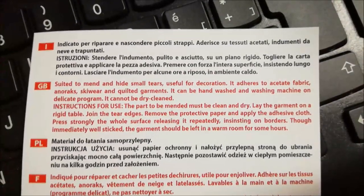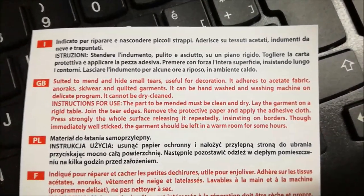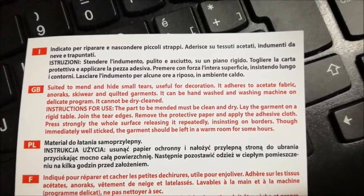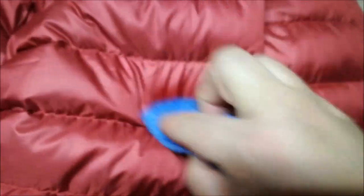There are instructions in several languages. Look at the instruction. We can start by cleaning the repair area because the dirt may prevent a good bond. I'm using a neutral soap. Okay, now dry the rip on the side.